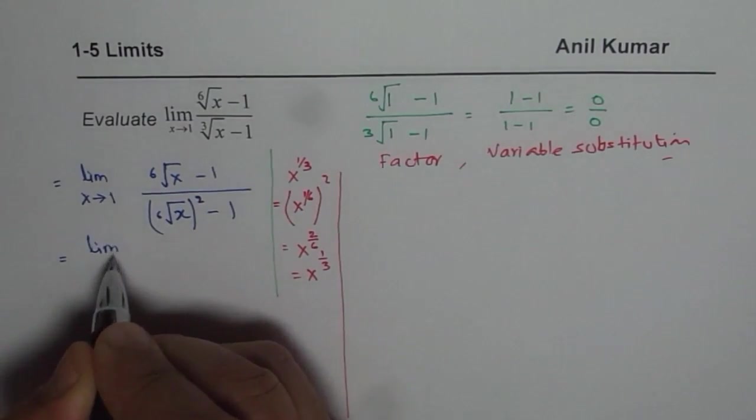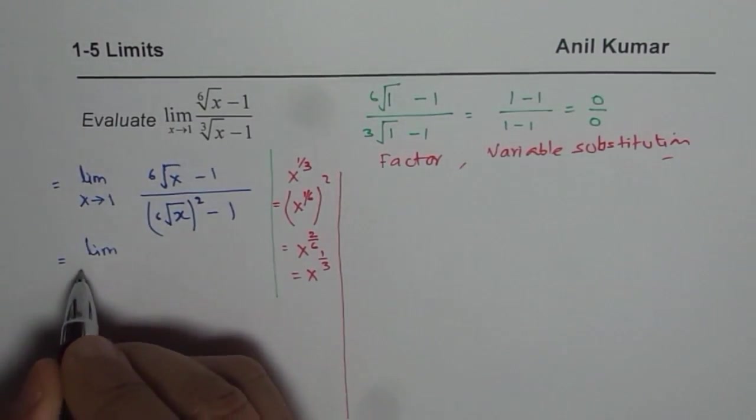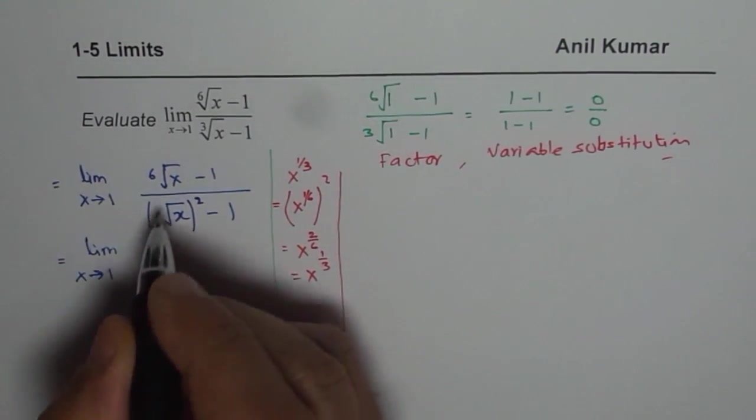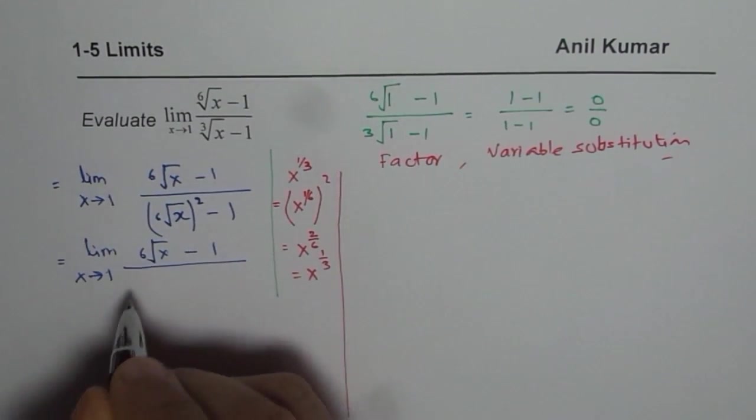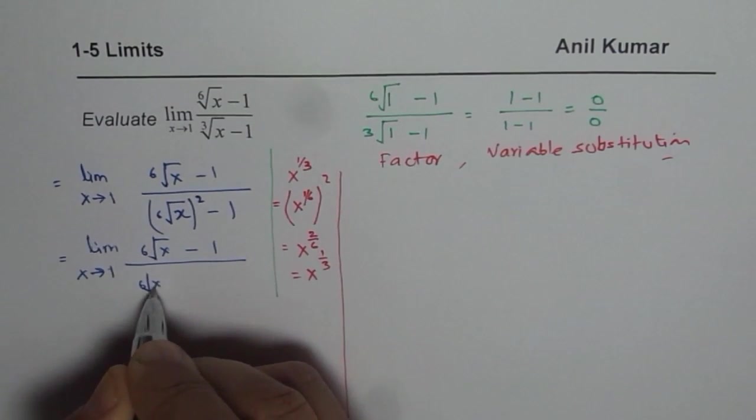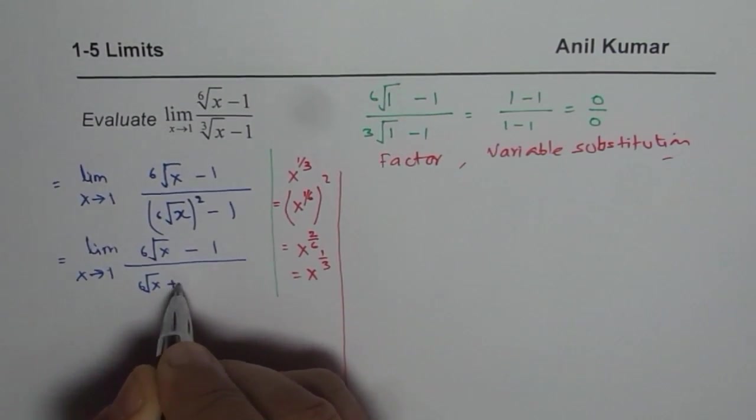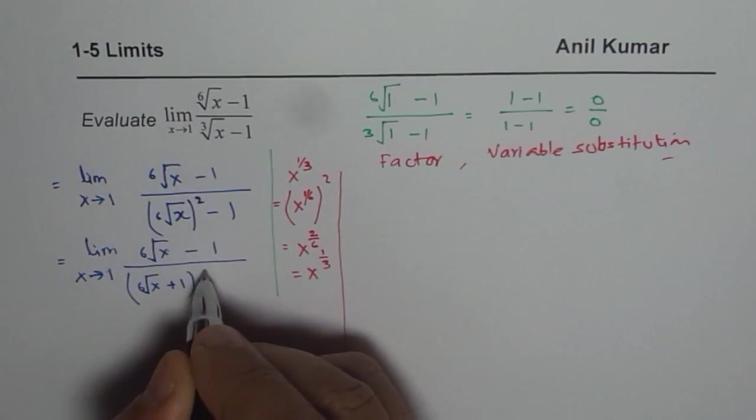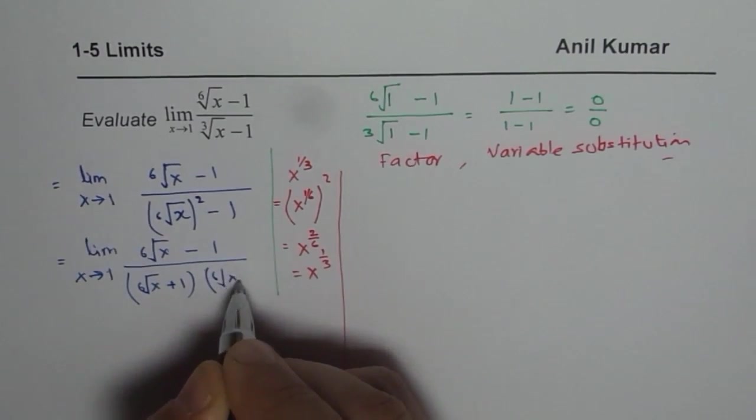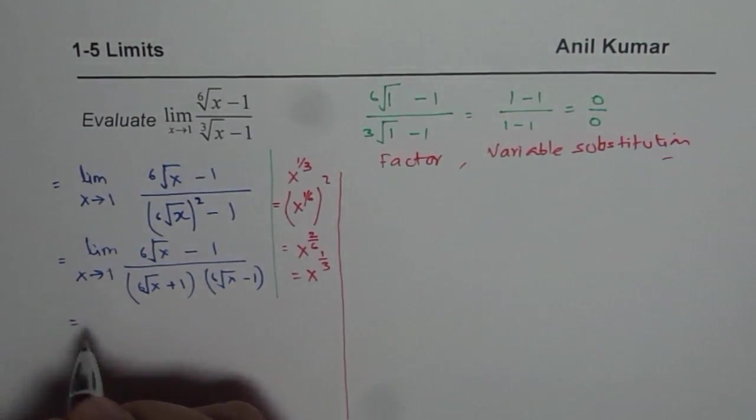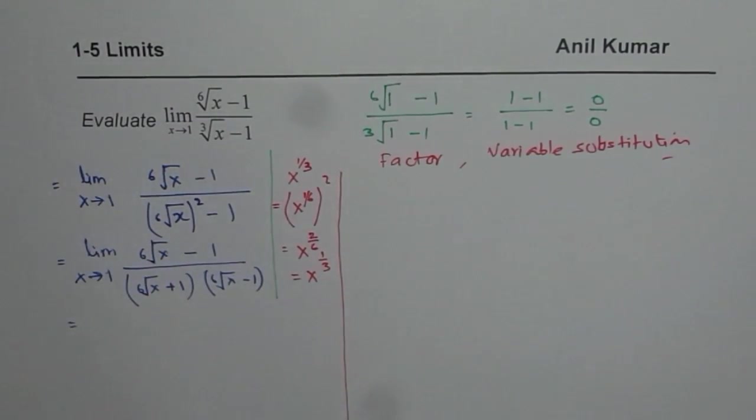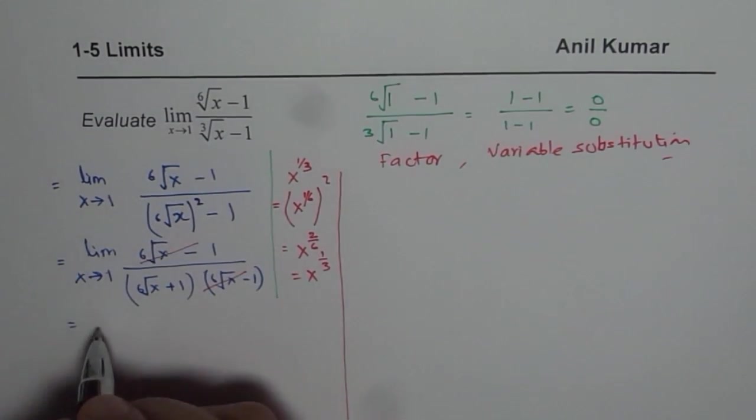And we'll factor as difference of squares. So it is x approaches 1 and 6th root of x minus 1 and we could write this as 6th root of x plus 1 times 6th root of x minus 1. You get the idea. So at this stage, you could cancel these two, correct?